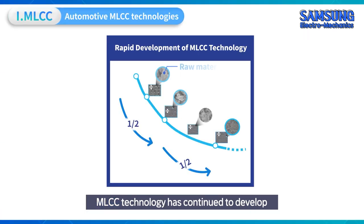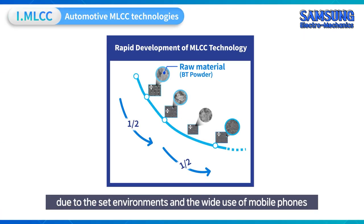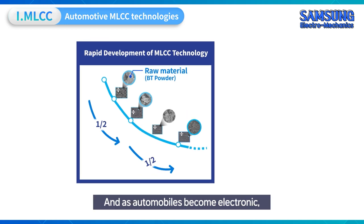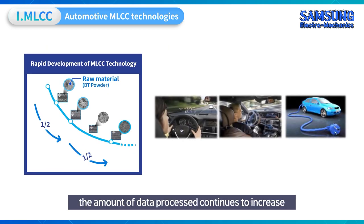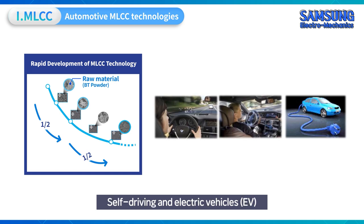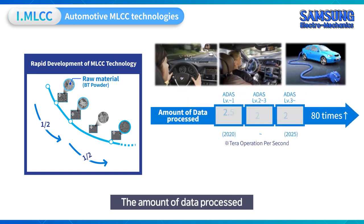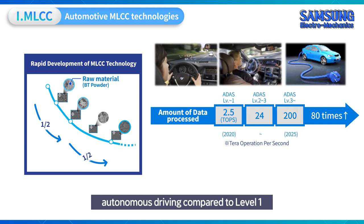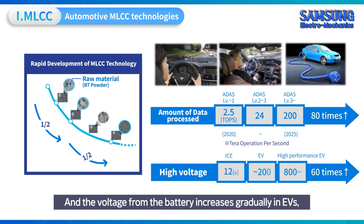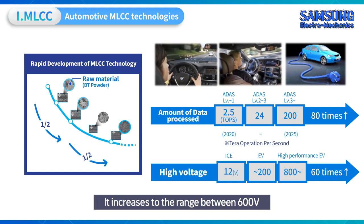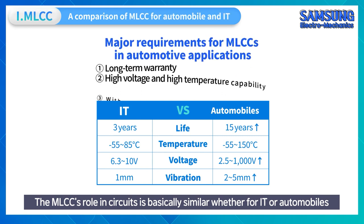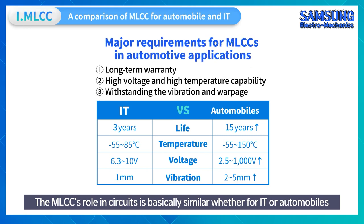MLCC technology has continued to develop due to set environments and the wide use of mobile phones. As automobiles become more electronic, the amount of data processed continues to increase. Self-driving and electric vehicles are automotive megatrends. The amount of data processed increases by about 100 times in Level 3 autonomous driving compared to Level 1, and the voltage from EV batteries increases gradually — from the previous 12V or 48V systems to a range between 600V and 1000V.